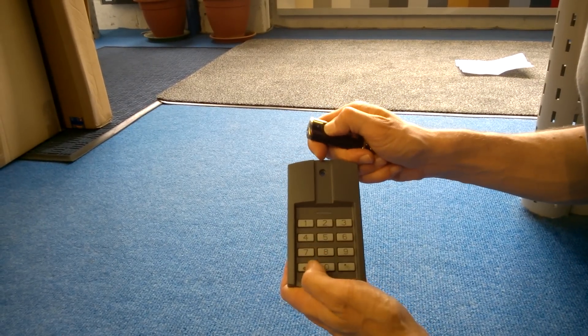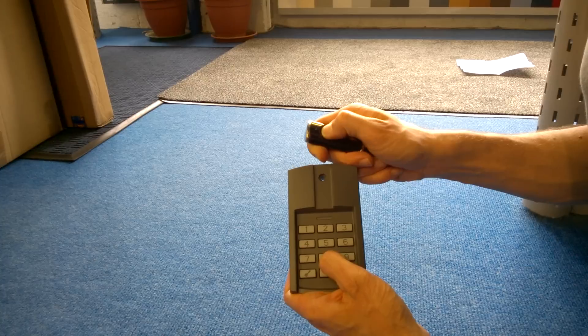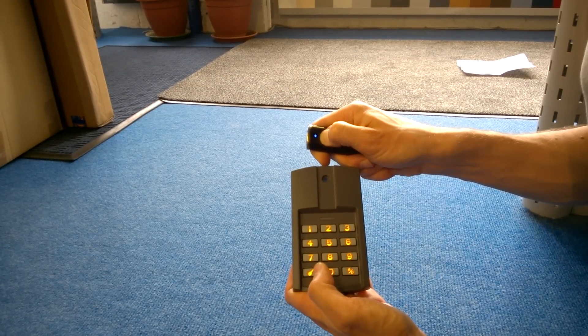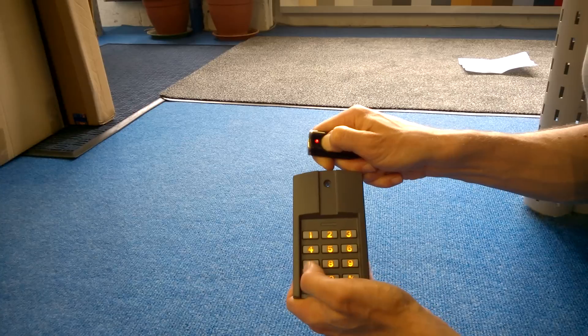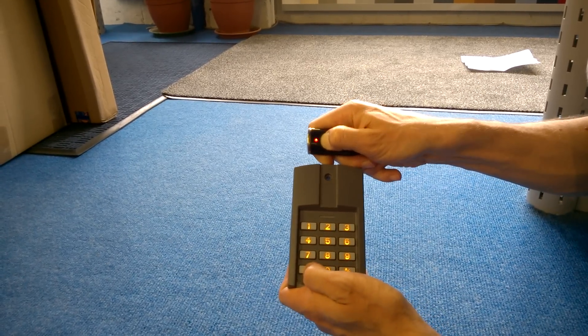So what we will do is press the key to illuminate the keypad. Hold the hand transmitter button down, put our code in: one, one, one, one. That's now flashing red and blue, so we can hit the key button.